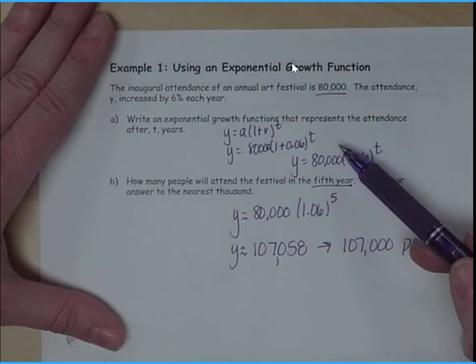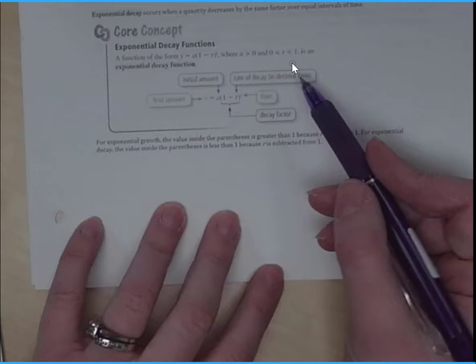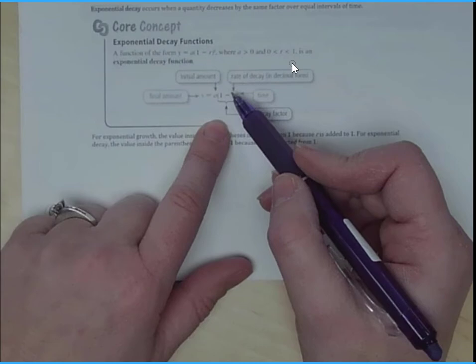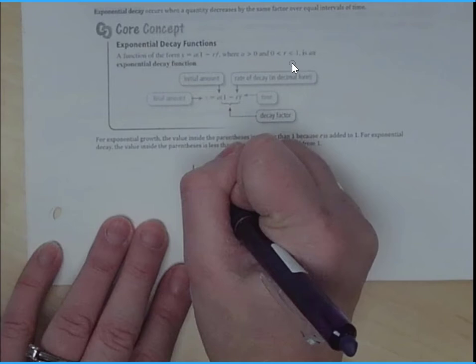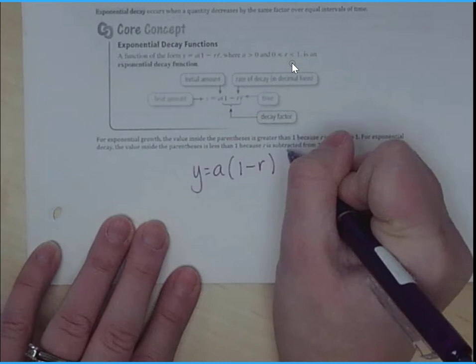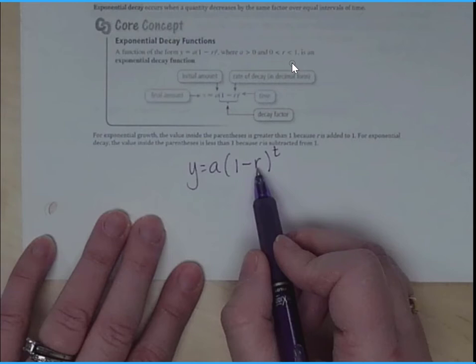Now we don't always have growth. Sometimes we have a decay, which is a population decrease over time or a decrease in bacteria or any type of exponential function. Now you'll notice the difference here in our equation. We have y equals a times the quantity 1 minus r to the t. Now the reason why we're subtracting r here is it's a decay.